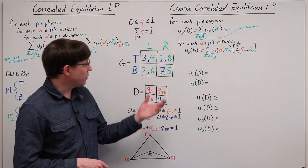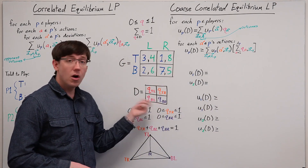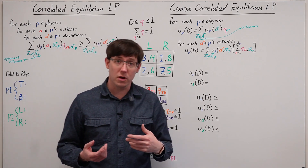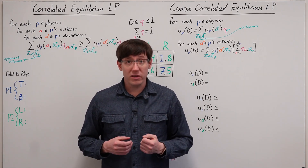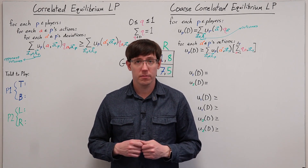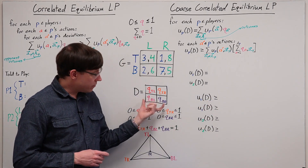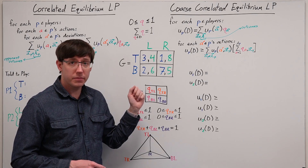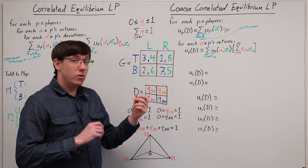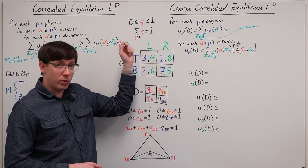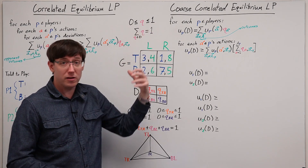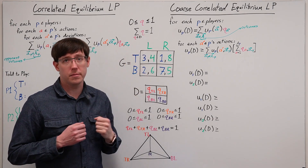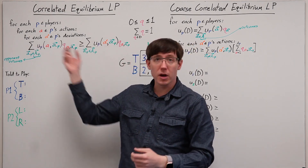Both of these solution concepts specify a probability distribution over a game's outcomes, and then impose constraints on that distribution based on when the players are best responding and what information they have. So for both of our linear programs, we'll have a variable representing the probability of each outcome in the game. We will constrain the variables to have a value between 0 and 1, and that all of the probabilities sum up to 1. But from here, these two linear programming approaches diverge.